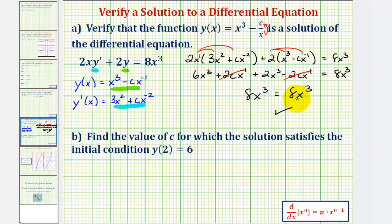And now for part b, we want to find the value of c, this constant here, for which the solution satisfies the initial condition, y of two equals six. So if we know y of x equals x to the third minus c divided by x is the solution. And this is our initial condition. We can find c by substituting two for x and six for our function value.